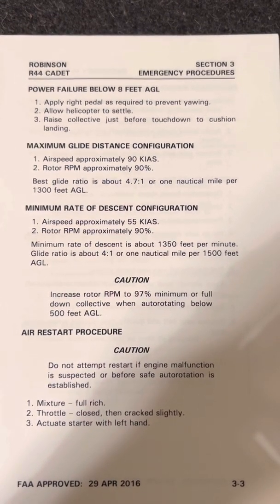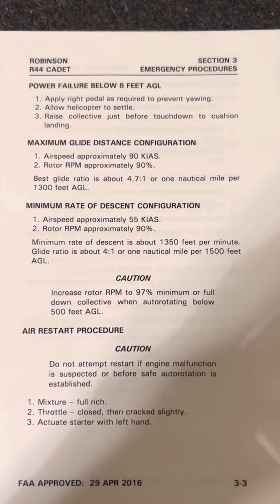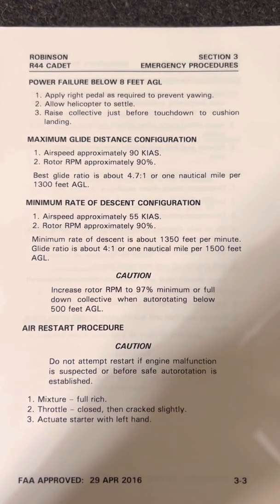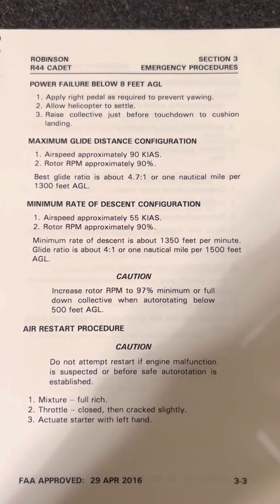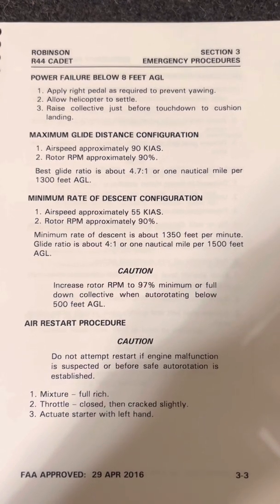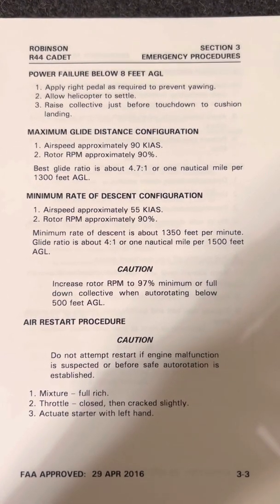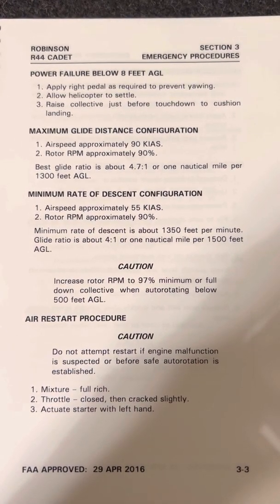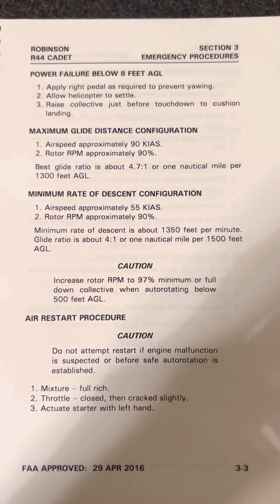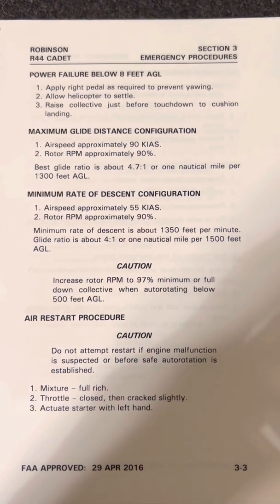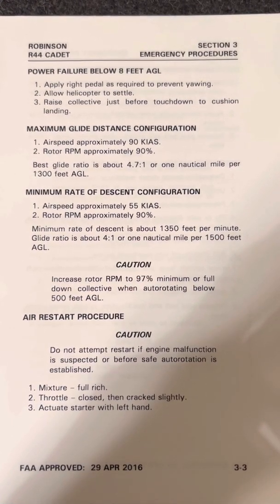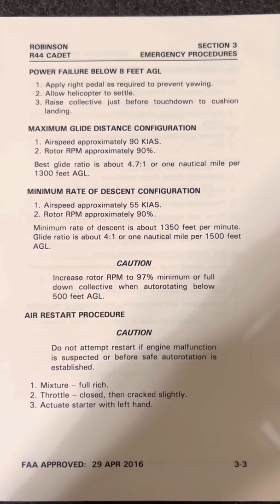Maximum glide distance configuration: 1. Airspeed approximately 90 knots. 2. Rotor RPM approximately 90 percent. Best glide ratio is about 4.7 to 1, or 1 nautical mile per 1,300 feet above ground level. Minimum rate of descent configuration: minimum rate of descent is about 1,350 feet per minute. Glide ratio is about 4 to 1, or 1 nautical mile per 1,500 feet above ground level. Caution: increase rotor RPM to 97 percent minimum or full down collective when autorotating below 500 feet above ground level.